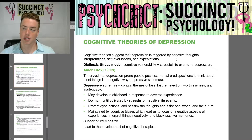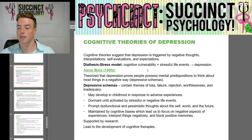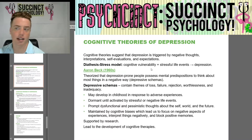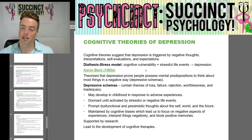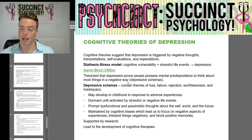Cognitive theories suggest that depression is triggered by negative thoughts, interpretations, self-evaluations, and expectations. Cognitive vulnerability plus stressful life events lead to depression. Aaron Beck in the 1960s theorized that depression-prone people possess mental predispositions that think about most things in a negative way, or depressive schemas.